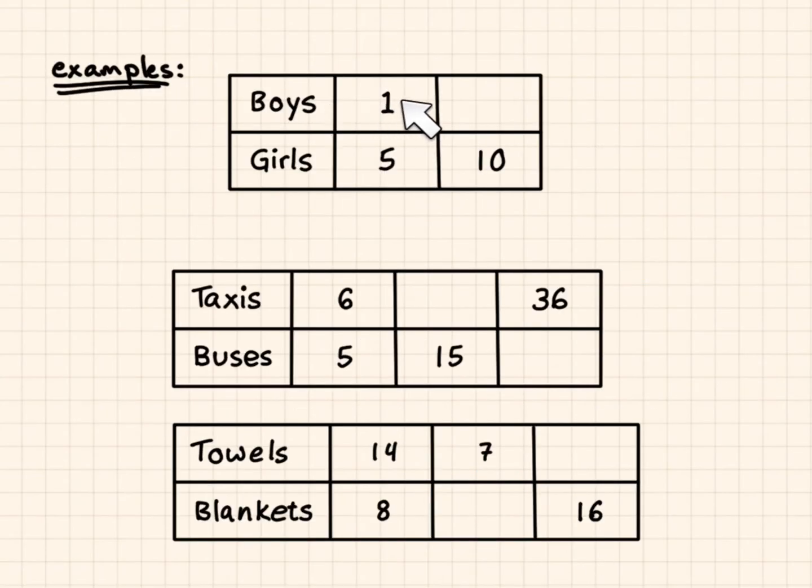Let's try some examples. There's one boy for every five girls. I can see that if I need this equivalent ratio and it's 10 girls, that's multiplying by two. I have to multiply the number of boys by two as well. So I get two boys to 10 girls.